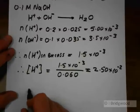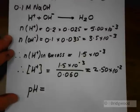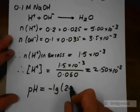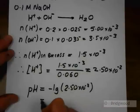From that, it's very straightforward to work out the pH, negative log of concentration of hydrogen ions. It's going to be 1.60.